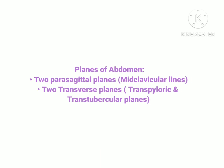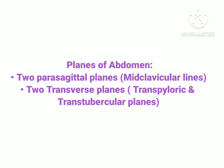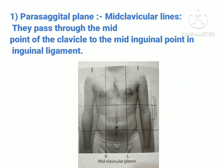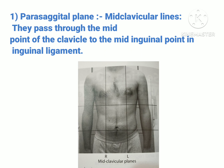Completing the surface anatomy, we move towards the planes of the abdomen. There are two parasagittal planes known as mid-clavicular lines, and two transverse planes known as the transpyloric and trans-tubercular planes. For the parasagittal plane, there are two mid-clavicular lines, which are actually vertical planes — imaginary vertical lines on the abdomen. They pass from the midpoint of the clavicle to the mid-inguinal point in the inguinal ligament.